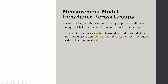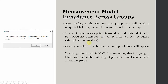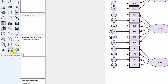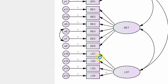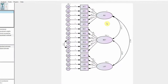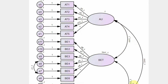You can imagine what a pain it would be to do this individually — especially if you've got 20, 30, or even 50 to 60 indicators. But AMOS has a function that will do it for you so you do not have to name each parameter yourself. Go to multiple group analysis, click it, press OK on the dialog box, and press OK on the parameter subsets. Look at this — all the parameters are now named: the covariances and the factor loadings are all labeled.